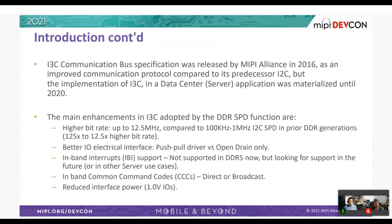The I3C communication bus specification was released by MIPI Alliance in 2016 as an improved communication protocol compared to its predecessor I2C, but the implementation of I3C in a data center or server application was materialized only until 2020 when we had the first DDR5 server. The main enhancements in I3C adopted by the DDR SPD functions include a higher bit rate — theoretically up to 12.5 MHz compared to 100 kHz to 1 MHz of an I2C SPD function in prior DDR generations.